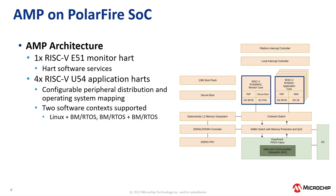PolarFire SOC supports two software contexts. For example, we can have an AMP configuration with Linux running in the first context and a bare-metal or a real-time operating system running on the second context. Or, we can have an AMP configuration with a bare-metal or real-time operating system running in the first context and another bare-metal or real-time operating system running in the second context.